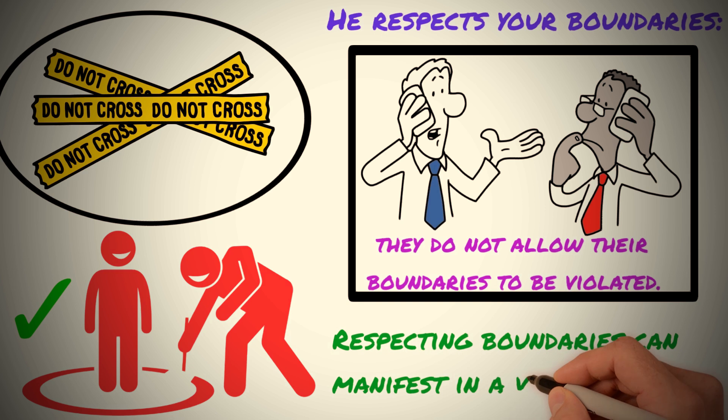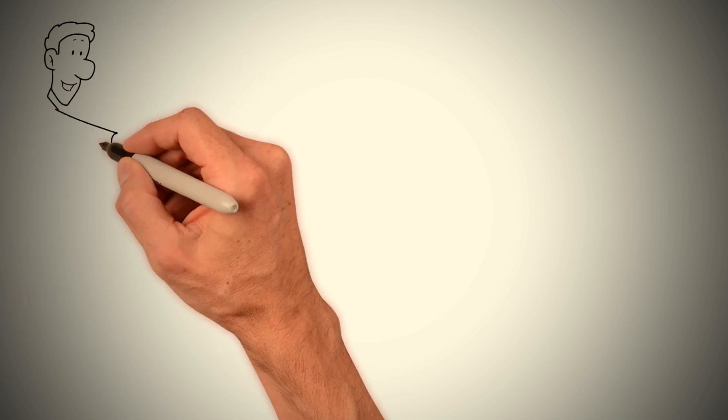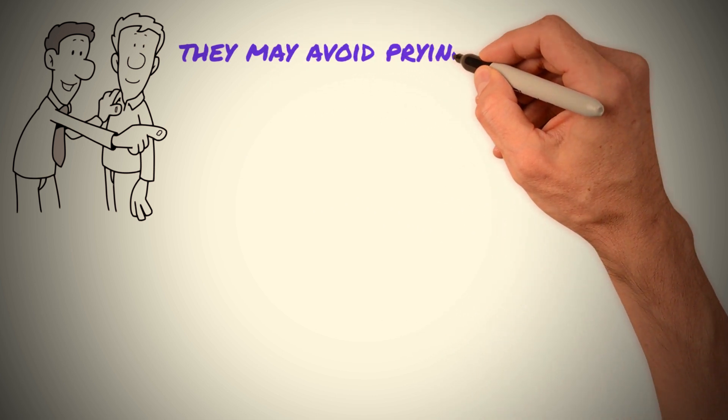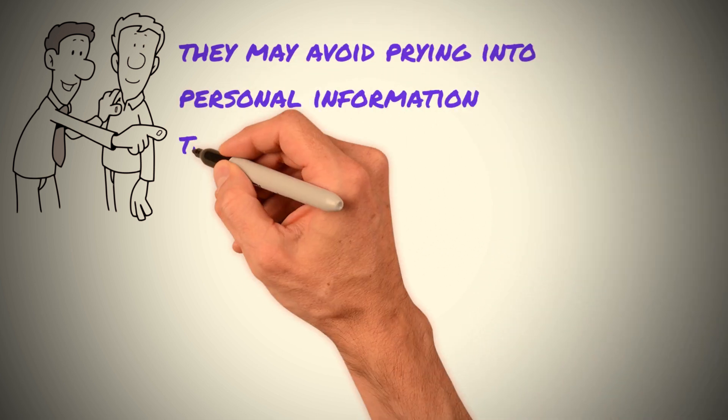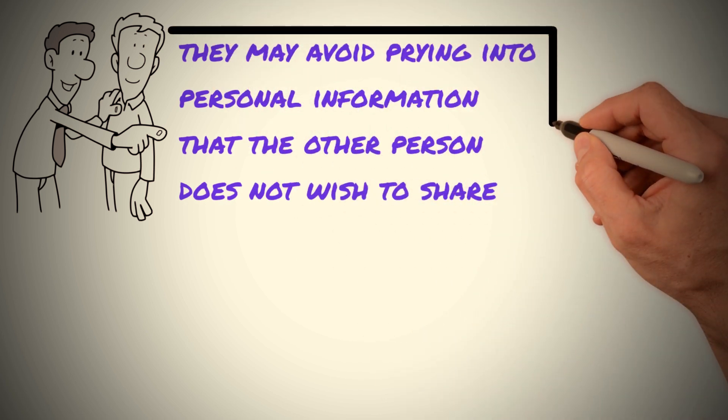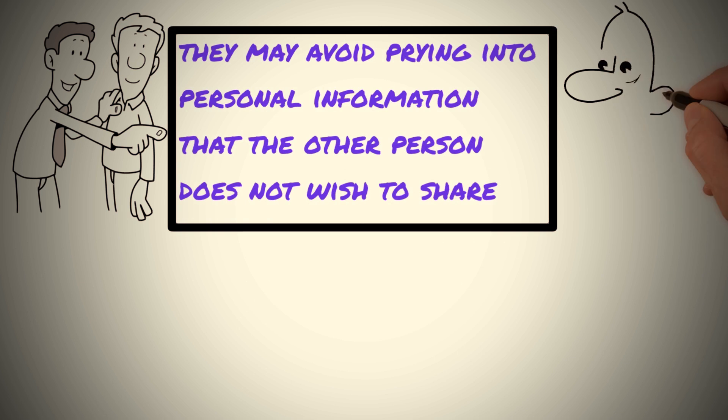Respecting boundaries can manifest in a variety of ways. For example, a Sigma male may ask for permission before touching someone, or they may avoid prying into personal information that the other person does not wish to share. They may also be mindful of social cues and body language and adjust their behavior accordingly.